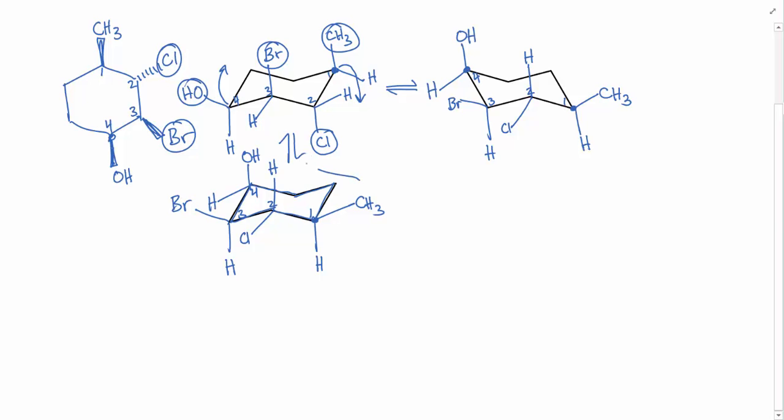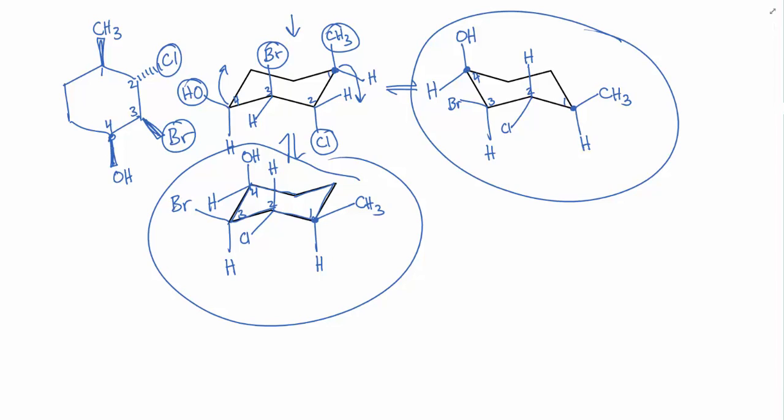So both this cyclohexane chair conformation and this one here, these are equivalent representations, which are both the chair flip of this first chair conformation that we drew. So those are the two different ways that you can quickly draw a chair flip of a cyclohexane ring.